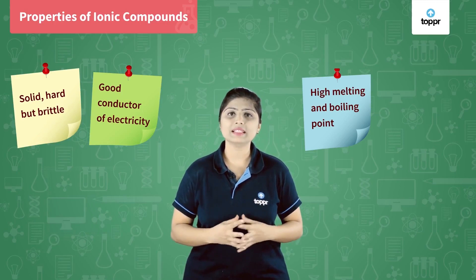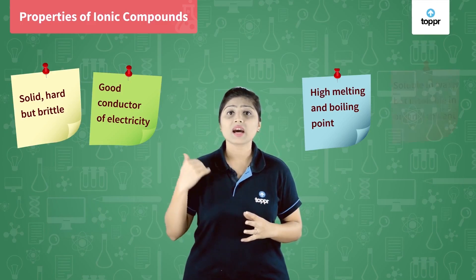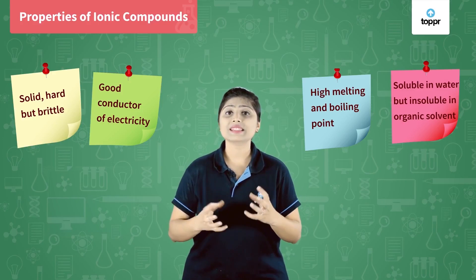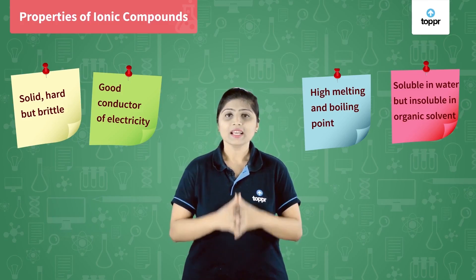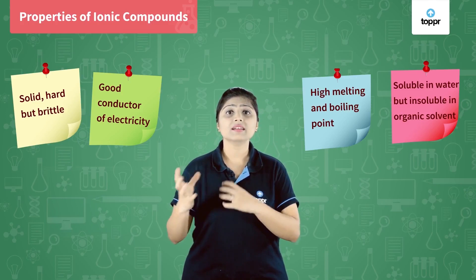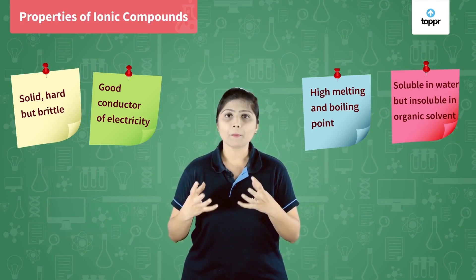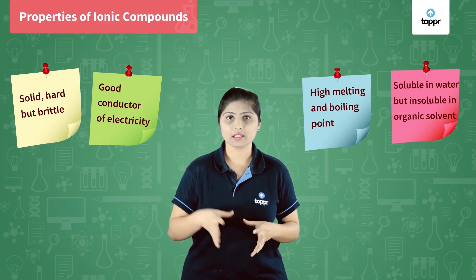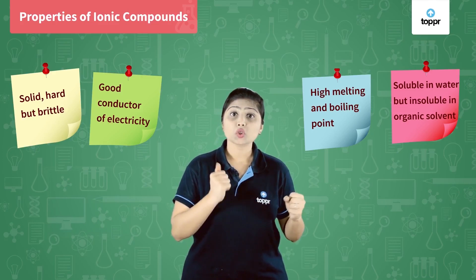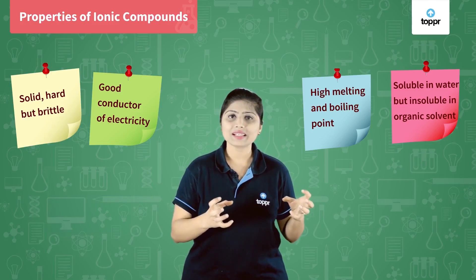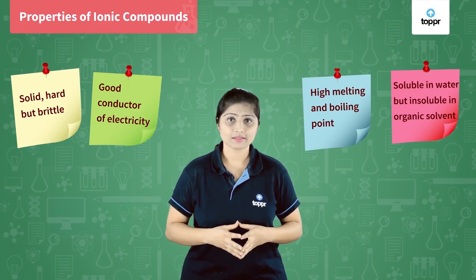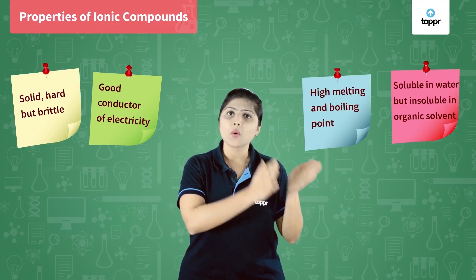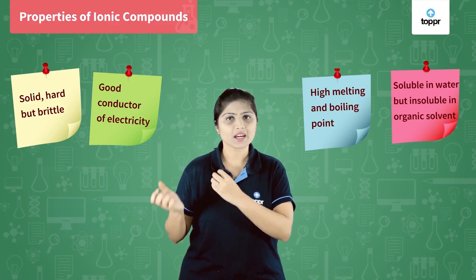The next property is solubility. Ionic compounds are soluble in water — they easily dissolve in water — but they are not soluble in solvents like kerosene, petrol, etc. This is because kerosene, petrol, and similar liquids are formed by covalent compounds, where non-metals share electrons. Water, however, shows ionic properties because it itself has two ions: H⁺ and OH⁻. So ionic compounds, which also have ions, will dissolve in water but not in petrol or kerosene. Like things dissolve in like things.